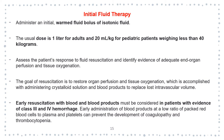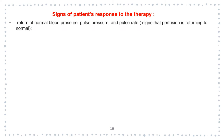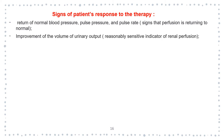Early resuscitation with blood and blood products must be considered in patients with evidence of class three and four hemorrhage. Early administration of blood products at a low ratio of packed red blood cells to plasma and platelets can prevent the development of coagulopathy and thrombocytopenia. Signs of patient response to therapy include return of normal blood pressure, pulse pressure and pulse rate, and signs that perfusion is returning to normal. Improvement in urinary output is a reasonably sensitive indicator of renal perfusion.